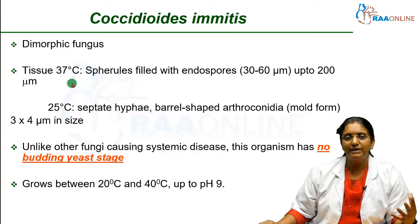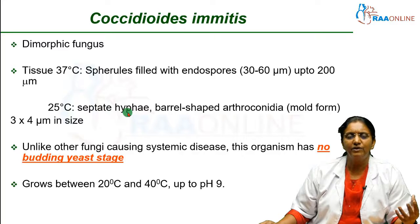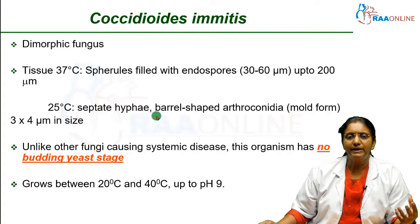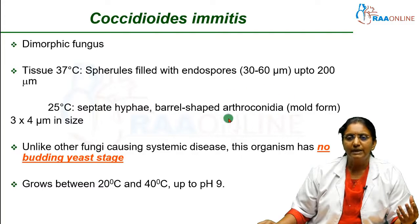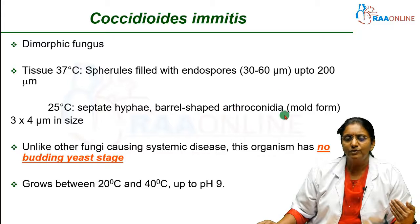At 25 degrees centigrade, you will get septate hyphae. Hyphae are the single strands which form the mycelial or mold-like form. These hyphae are septate and each septum can fragment into arthroconidia. 'Arthro' means joints, so these look like joint spaces and they are barrel-shaped. These arthroconidia form along the septa, can break and fragment, becoming the spores that we inhale in order to get infected. Individual arthroconidia are 3 to 4 microns in size.